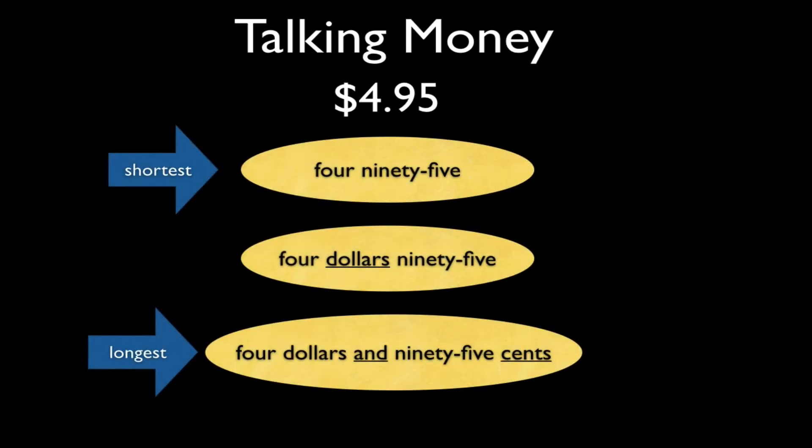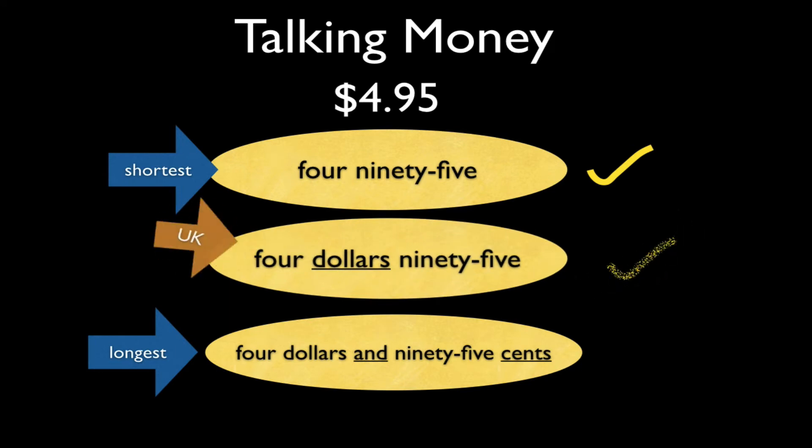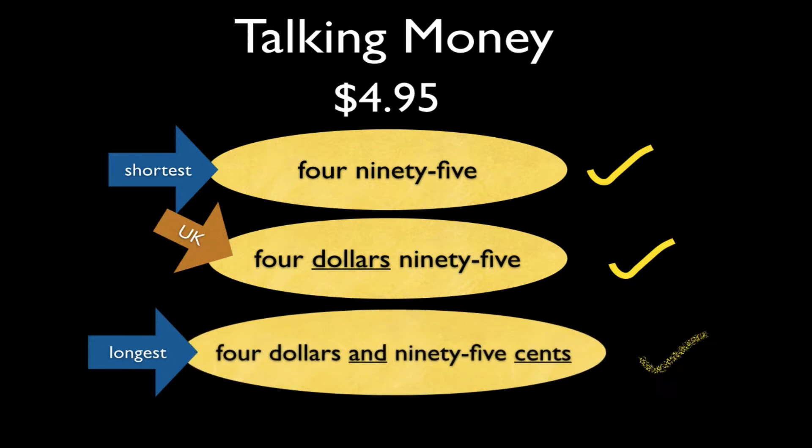Let's look at how we can talk about money. So there are different ways from shorter to longer. Shortest would be 4.95 and here we know from context that it means four dollars and ninety-five cents. But we can say four ninety-five. Common in the UK is also four dollars ninety-five or four pounds ninety-five. And finally you can say four dollars and ninety-five cents. So here you're saying everything. And all of these ways are fine.